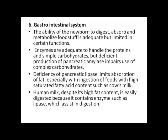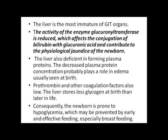The gastrointestinal system: the ability of newborns to digest, absorb, and metabolize food is adequate but limited in certain functions. Enzymes are adequate to handle proteins and simple carbohydrates, but there is deficient production of pancreatic amylase for complex carbohydrates. Deficiency of pancreatic lipase limits absorption of fat, especially with foods high in saturated fatty acids such as cow's milk. Human milk, despite its high fat content, is easily digested because it contains enzymes such as lipase. The liver is the most immature GI organ; the activity of glucuronyl transferase is reduced, affecting conjugation of bilirubin with glucuronic acid and contributing to physiological jaundice of the newborn.